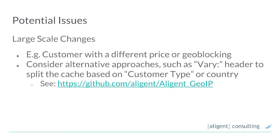Then we get into large-scale changes. You get the site that says: I don't want pricing to be visible in China — that's actually a real requirement we had once. How do we make those pages cacheable? How do we deal with full page cache when things like the country you're in change the content? It's probably not something we can deal with using just a cookie-based approach. Another example is a customer that does retail and trade pricing.